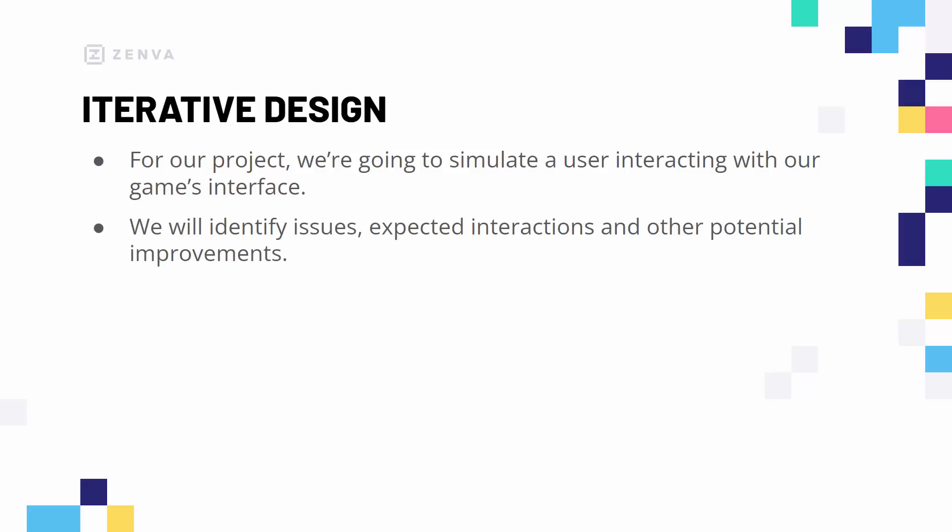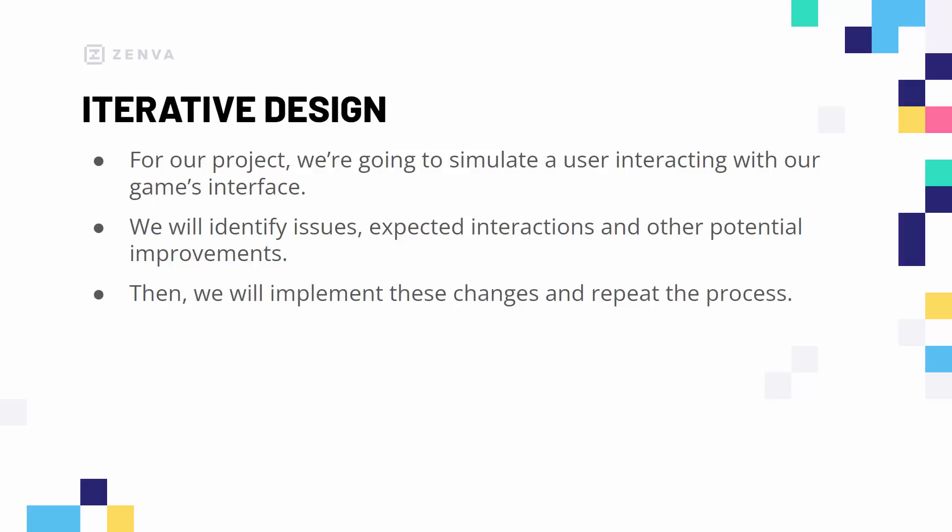This is going to allow us to identify issues, identify expected interactions, and other potential improvements that we can make. Then what we're going to do is implement these changes and repeat the process until we are happy with our wireframe.